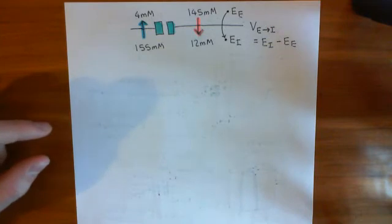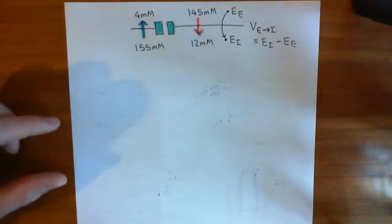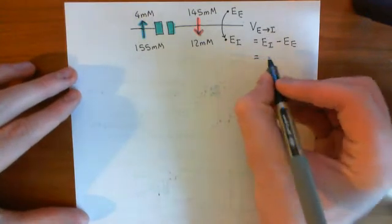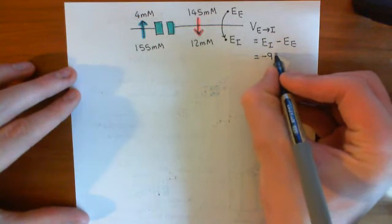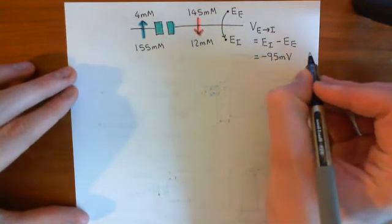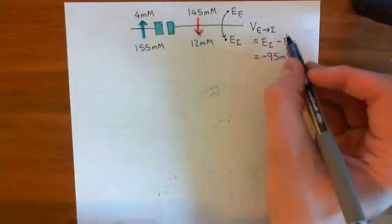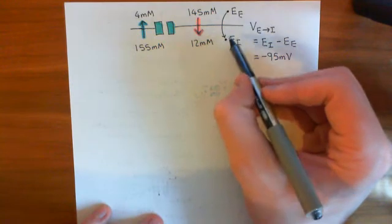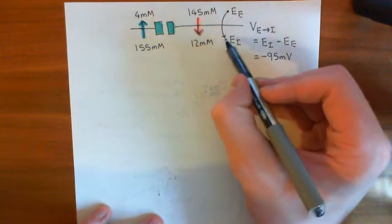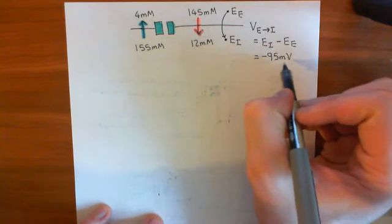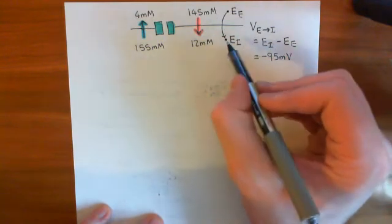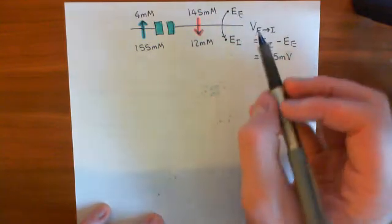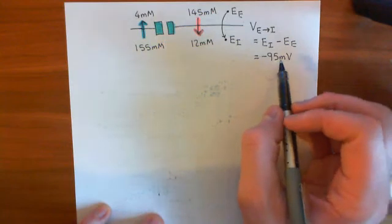We were discussing the electrical potential difference across a skeletal muscle cell membrane. The resting electrical potential difference across the membrane of a skeletal muscle cell is generally around negative 95 millivolts. What this means is that if a positive charge moves from the extracellular to the intracellular compartment, the electrical potential will go down by 95 millivolts. So the intracellular electrical potential is lower than the extracellular electrical potential by a whole 95 millivolts.